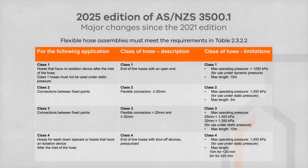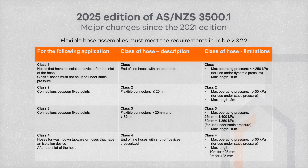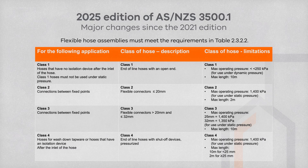Here is classification Table 2.3.2.2, providing a snapshot of the requirements of flexible hose assemblies dependent on the class, application, and the limitations associated with these installations.